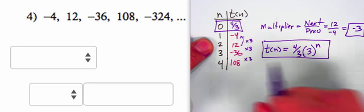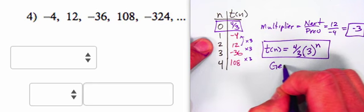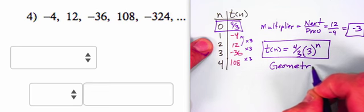But if it is multiplying, there's a name for that kind of equation. It's geometric. So you're going to have geometric be the name of this sequence.